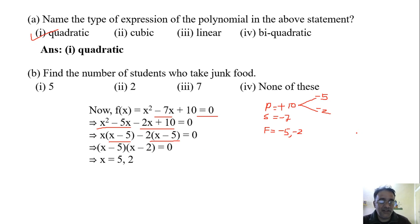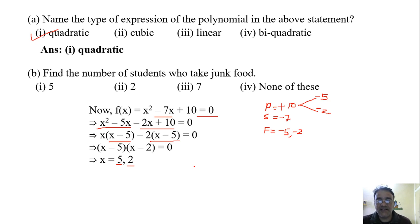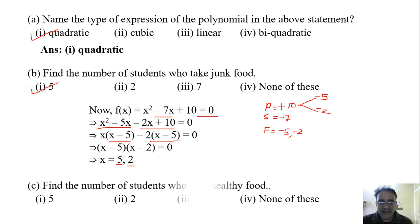Since alpha is greater than beta, alpha equals 5 and beta equals 2. Alpha is the number of students who take junk food, so the answer is 5. For the next question — find the number of students who take healthy food — the answer is 2.